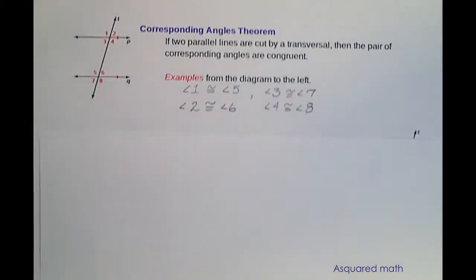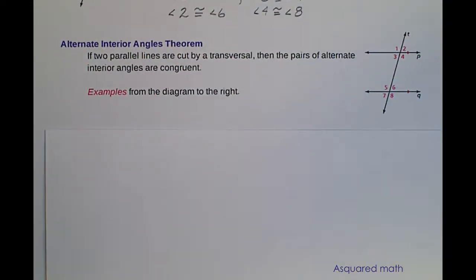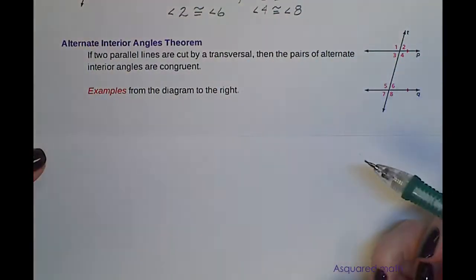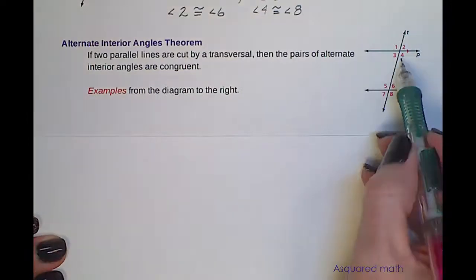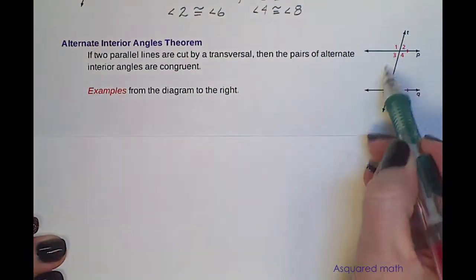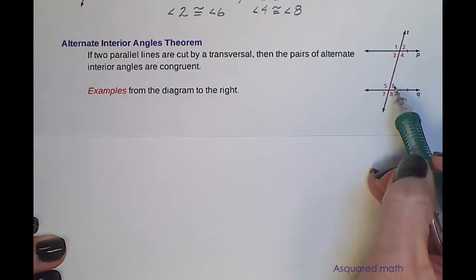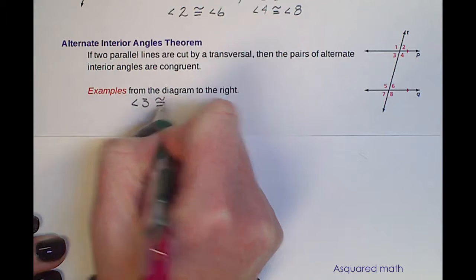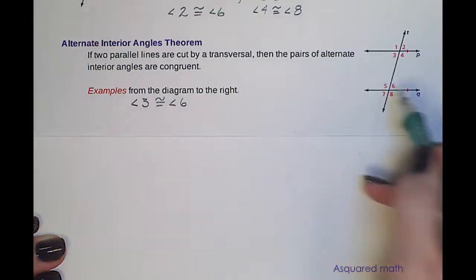The next set of angles we're going to look at are the alternate interior angles. The alternate interior angles theorem says if two parallel lines are cut by a transversal, then the pairs of alternate interior angles are congruent. Alternate interior angles are on the inside of the parallel lines and on alternate sides of the transversal. So that means angle 3 and angle 6 are congruent to each other, and also angle 4 is congruent to angle 5.